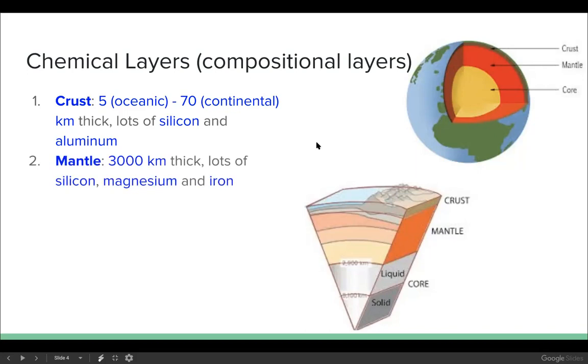We have the medium layer which is called the mantle. This layer is very thick, it's 3000 kilometers thick and it has lots of silicon and also magnesium and iron which are heavier materials than aluminum.